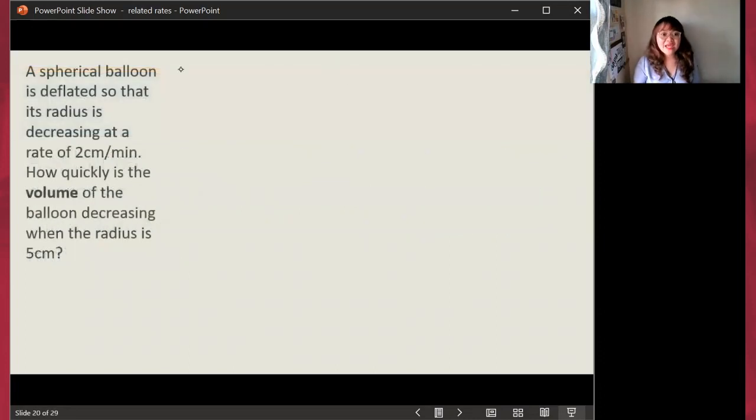So, we begin by creating your illustration and taking the problem little by little. We have a spherical balloon and it is being deflated. Therefore, air is coming out of it so that its radius is decreasing. The radius is the point from the center to the outline and it's decreasing. So, it's decreasing at what rate? At 2 centimeters per minute.